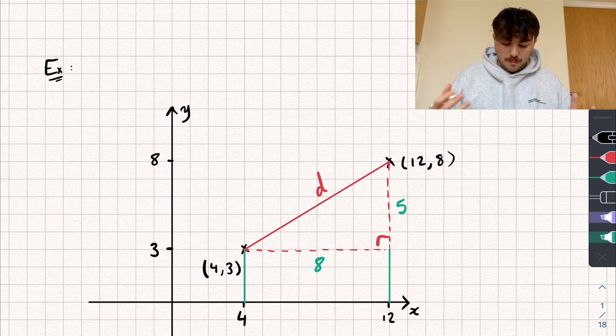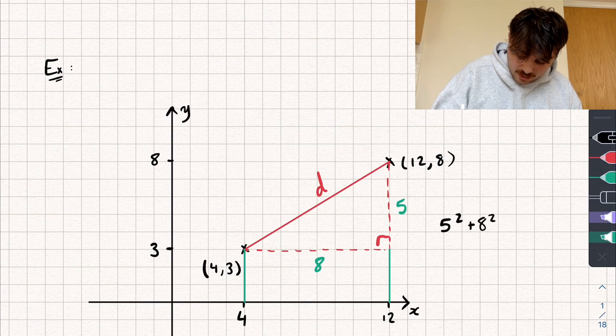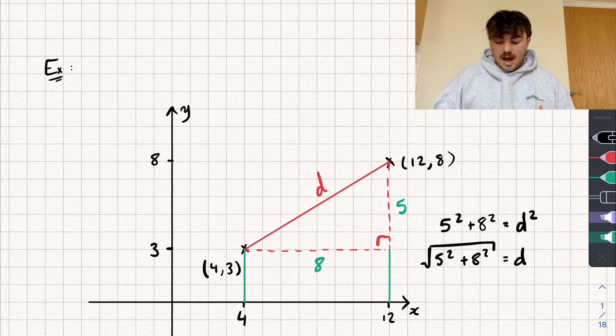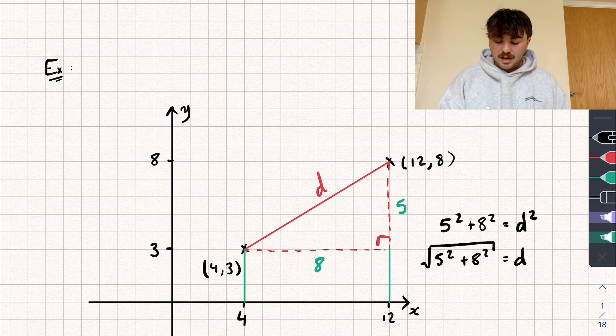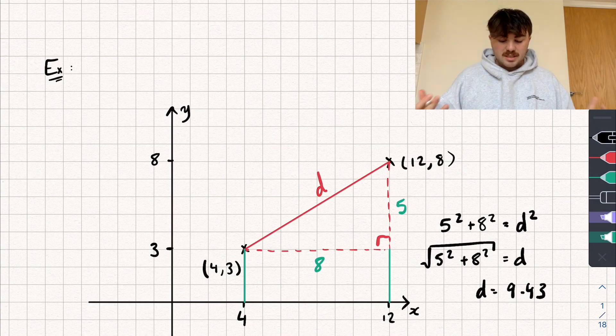So let's now use Pythagoras and calculate our missing side. So we can do 5 squared plus 8 squared and say that's equal to our D squared. And so we could square root both sides and we're going to get the square root of 5 squared plus 8 squared is equal to our missing side length, D. And we're not going to take plus or minus the square root because we're talking about a distance, and so we want it to be positive. And if we work it out, we get an answer of D being equal to 9.43. So that's how we're going to do it.